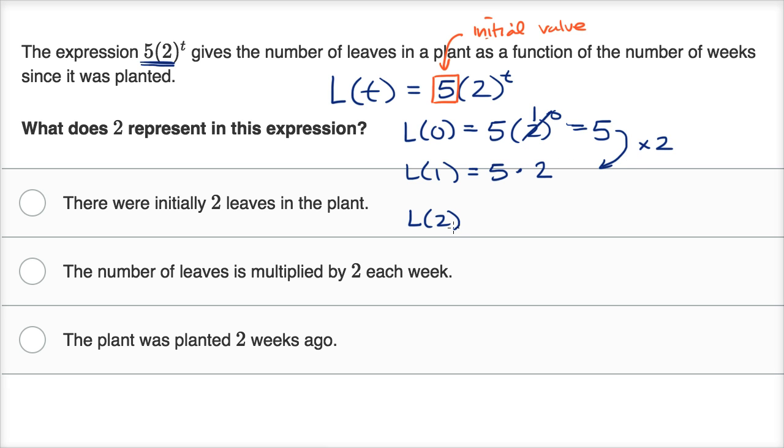Well, what happens after two weeks? The number of leaves after two weeks? Well, that's gonna be five times two to the second power. Well, that's the number that you had in the first week times two. So it looks like every week we are doubling, we are multiplying by two.